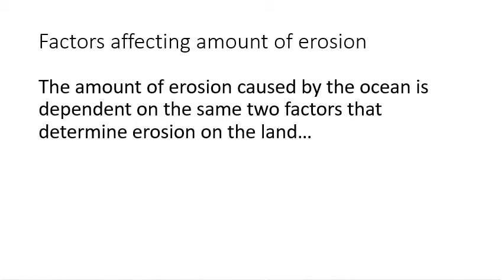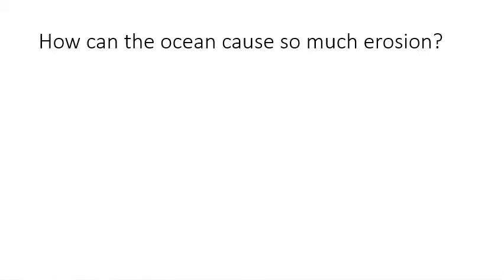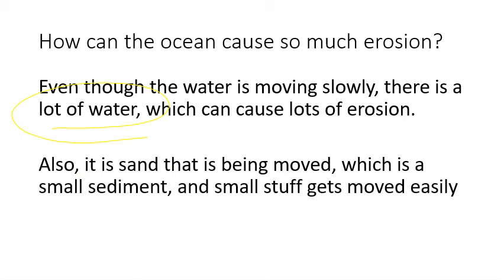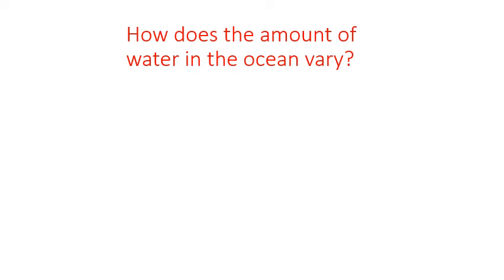The same factors that affect erosion in surface waters apply to the ocean: the amount of water and the speed of water. The ocean's water moves slowly, but the ocean is a big bucket — there's a lot of water, so more water means more erosion. Also, we're primarily talking about sand, which is small and gets moved easily. The ocean won't push around boulders or pebbles, but it can push small stuff like sand, silt, and clay pretty easily. The amount of water constantly changes with high and low tides, so the amount of erosion changes too.